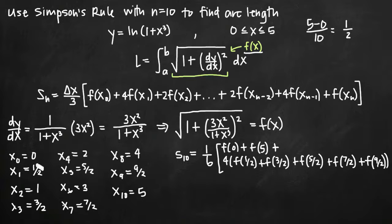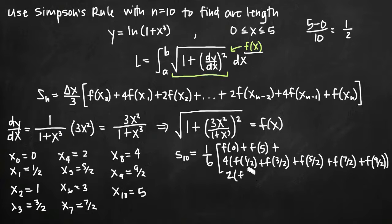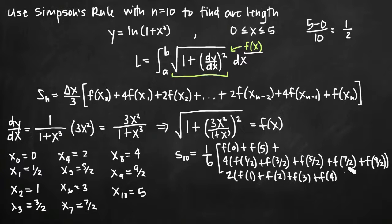Then all even-indexed values — x sub 2, 4, 6, and 8 — corresponding to f of 1, f of 2, f of 3, and f of 4 — are all multiplied by 2. All of these terms are added together inside the brackets. So at this point we essentially have a big arithmetic problem.